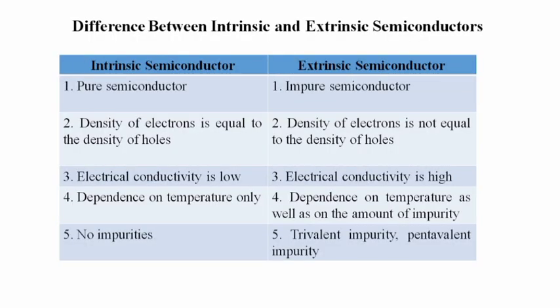The difference between intrinsic and extrinsic semiconductors: an intrinsic semiconductor is a pure semiconductor whereas an extrinsic semiconductor is an impure semiconductor. In a pure semiconductor, the density of electrons equals the density of holes. In a pure semiconductor, electrical conductivity is low, whereas for an extrinsic semiconductor, electrical conductivity is high. In a pure semiconductor, conductivity depends only on temperature, whereas for an extrinsic semiconductor, electrical conductivity depends on both temperature and the amount of impurity. In a pure semiconductor there are no impurities, whereas for an extrinsic semiconductor there will be trivalent or pentavalent impurities.